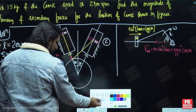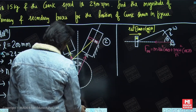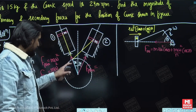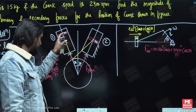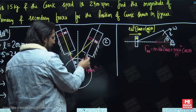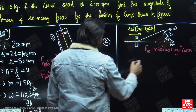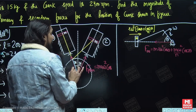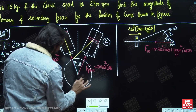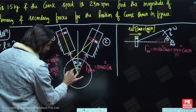Now if you ask me the unbalanced forces because of the reciprocating mass of the second cylinder, the forces will be along the second cylinder's line of stroke. The primary unbalanced force is m·r·ω²·cos(θ). The angle made by the crank from the line of stroke of the second cylinder - please listen carefully - that angle is 60 degrees.